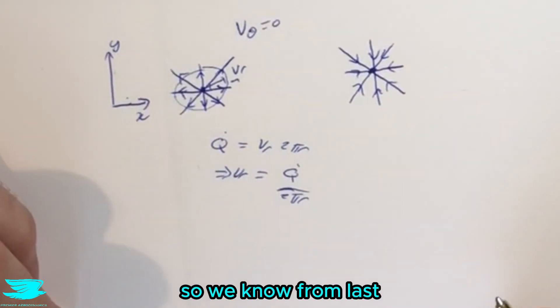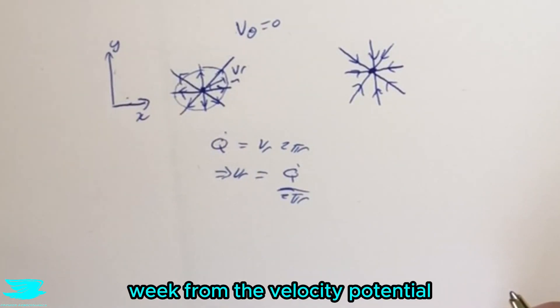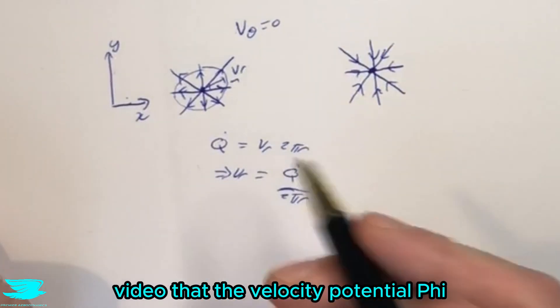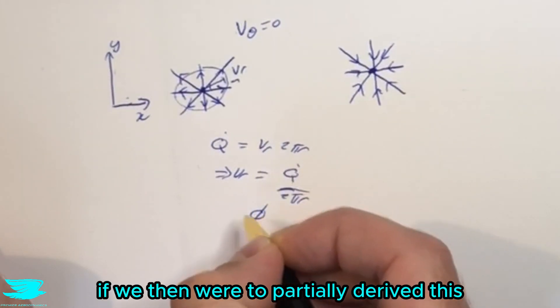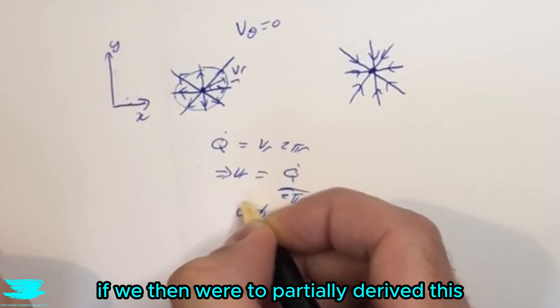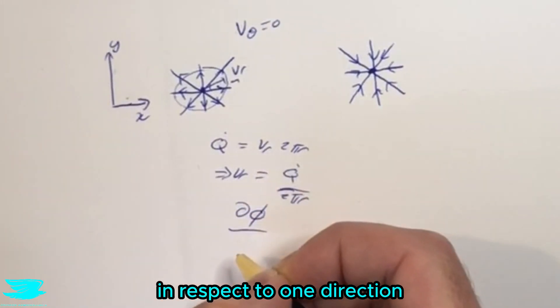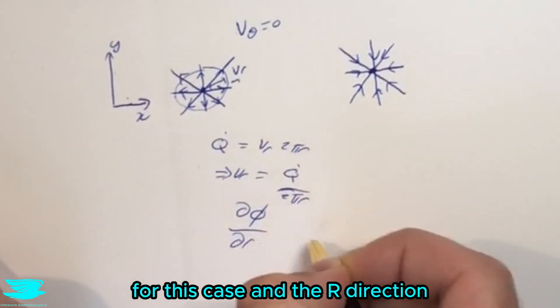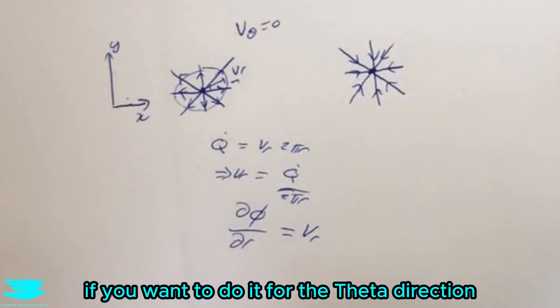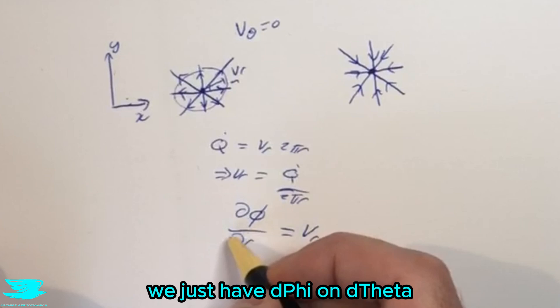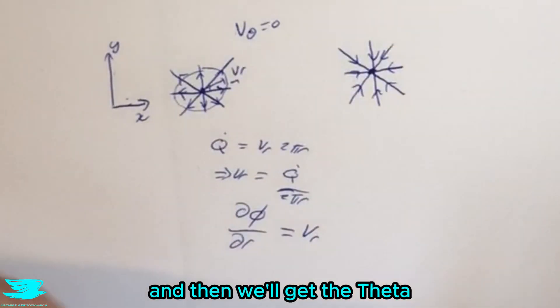So we know from last week, from the velocity potential video, that the velocity potential φ, if we then were to partially derive this in respect to one direction, for this case in the r direction, this would then give us v_r. So the velocity in this direction. If we want to do it for the theta direction, we just have dφ/dθ and then we'll get v_θ.